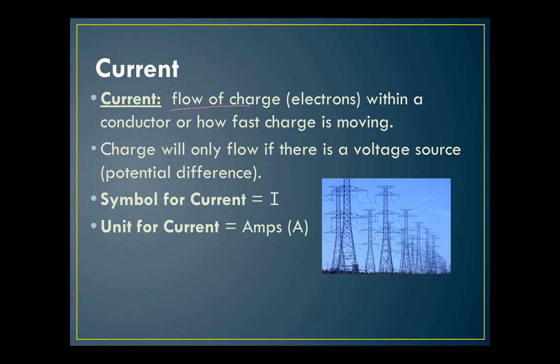So current is the flow of charge within a conductor. It's the rate of flow, the rate of flow of charge. And that charge only flows if there's some reason for it to flow. That's what we call the potential difference. You need some sort of voltage source, some sort of energy input in order for that charge to start moving.